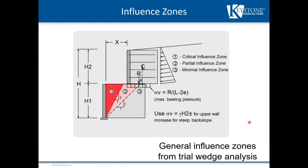These influence zones have been established from trial wedge analysis. Here's the critical influence zone — it's closest to the lower tier. This is a partial influence zone. And here's a minimal influence zone.